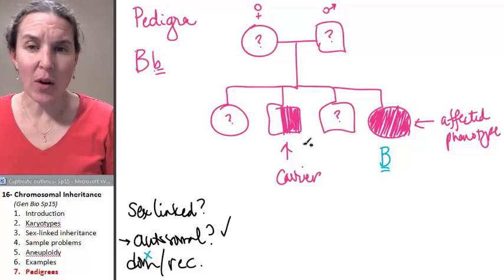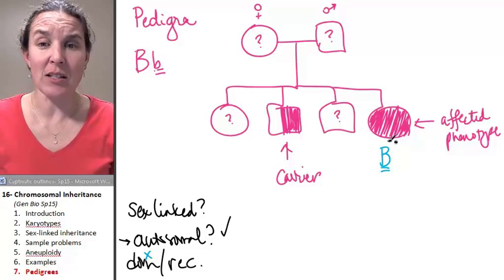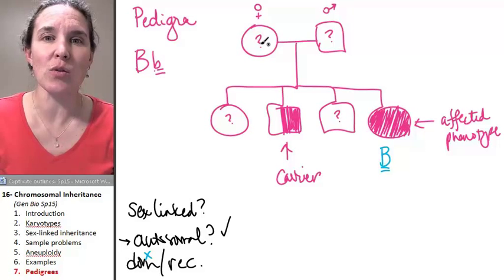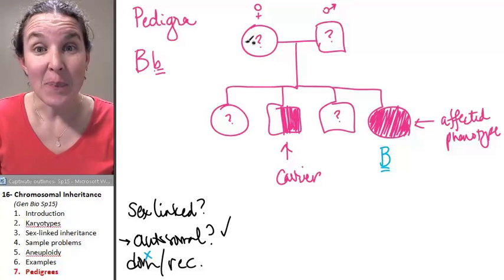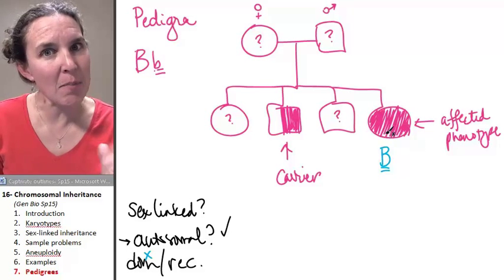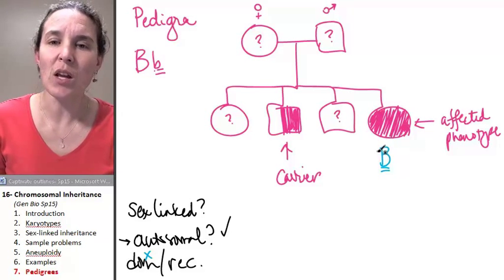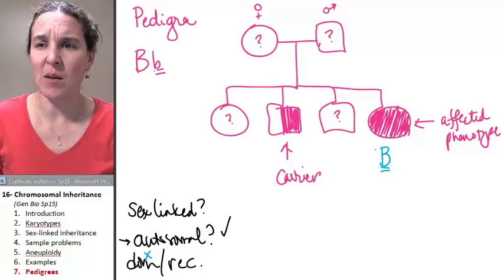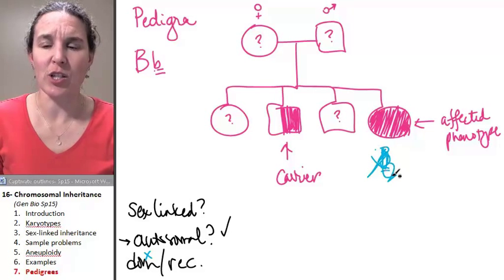The key, if you're looking at what kind of inheritance pattern does this condition have, the key is to see, do the parents have it? And if the parents have it and the kids have it, then it might be dominant. So this could not be a dominant inheritance situation.